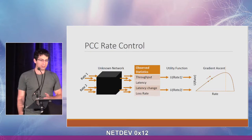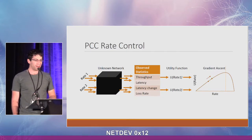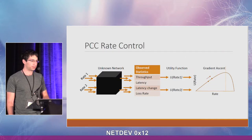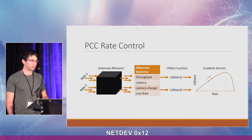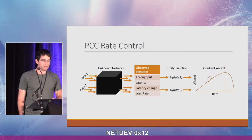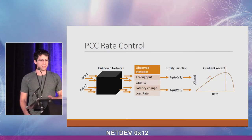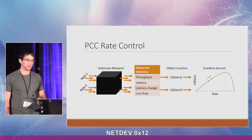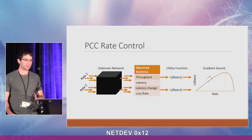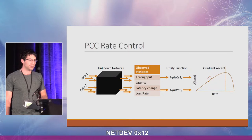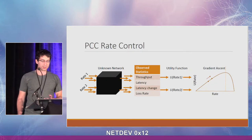Now that we have the utility function, we want to decide what the next rate to test will be. We use two intervals to calculate utility values, then calculate the gradient of the utility and use gradient descent to quickly maximize it.